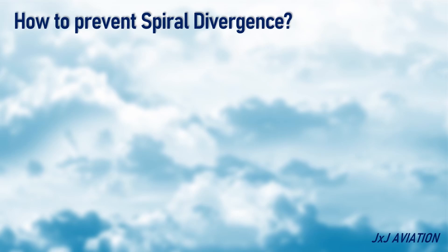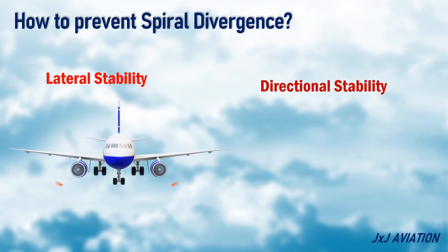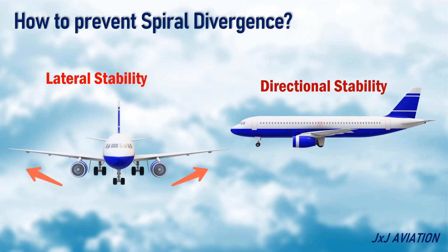How to prevent spiral divergence? To prevent spiral divergence, an aircraft should have sufficient lateral stability and directional stability. Lateral stability is achieved by designing dihedral wings. Directional stability is achieved using a larger vertical stabilizer. Differential ailerons, which will level out the wings after a disturbance, may also be installed in the aircraft.